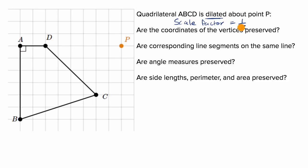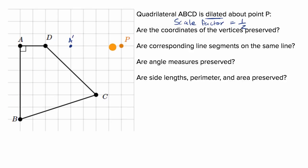So what would result? Right now point A is eight away from point P. Its image, with a scale factor of one half, would be four away. So A prime could be right over there — along the same line, just half as far.